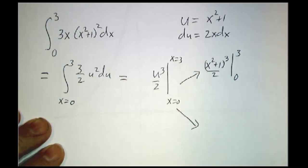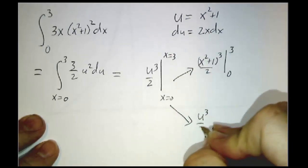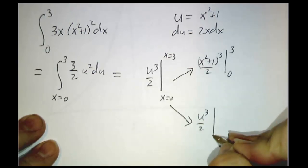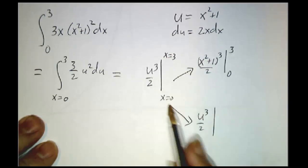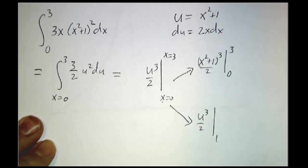In the other approach, instead, we keep things as u cubed over 2, but we say, what are the values of u? When x is 0, u is 1. When x is 3, u is 10.